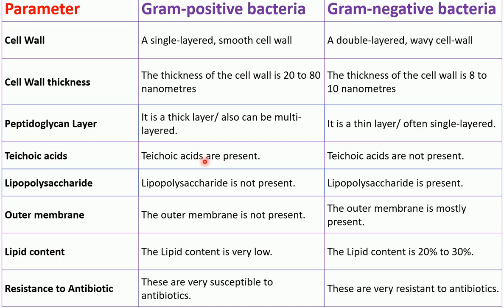Teichoic acids are present in gram-positive bacteria, whereas in gram-negative bacteria teichoic acids are not present. Lipopolysaccharides are not present in gram-positive bacteria, whereas in gram-negative bacteria lipopolysaccharides are present.